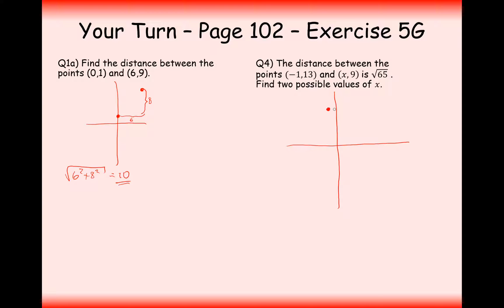Now this coordinate here is going to be some value x along this axis here, and a y coordinate of line 9. So on my diagram, I'm going to draw this 9 coordinate below this coordinate here, so over here, or it could be over here. So I could have two different values of x, where this distance from here to here is the square root of 65, or this distance from here to here is the square root of 65.